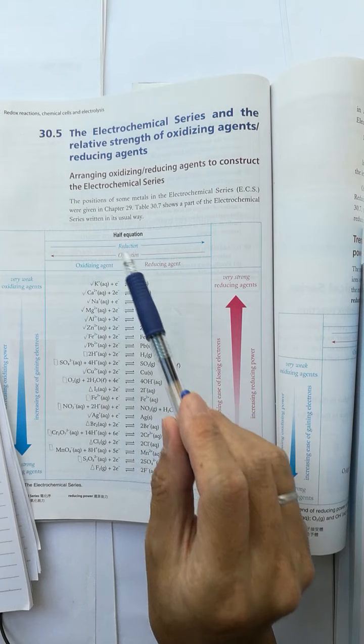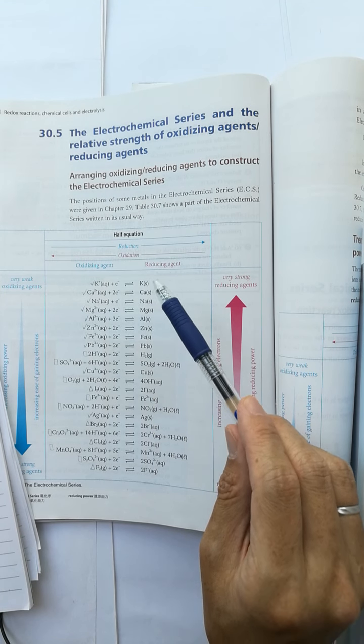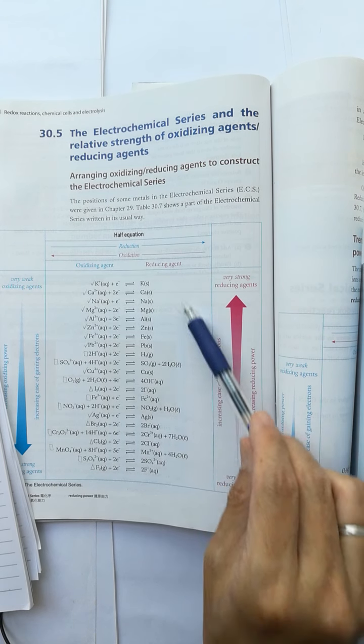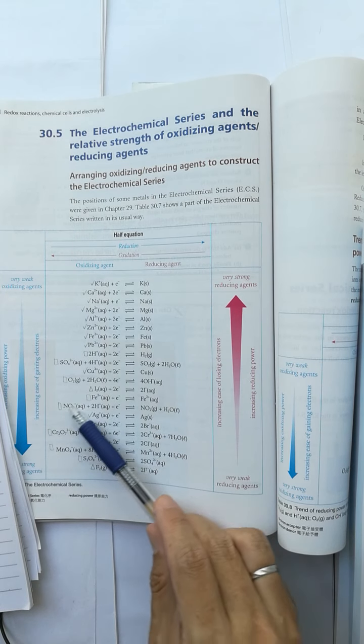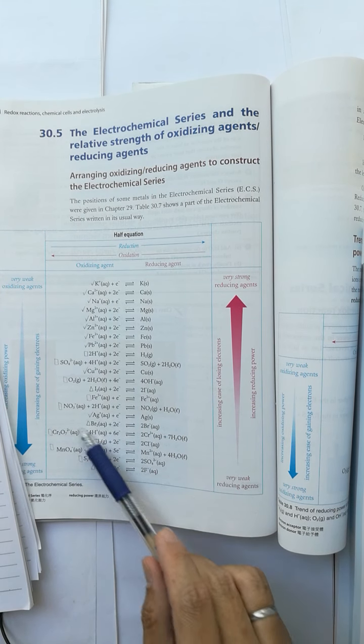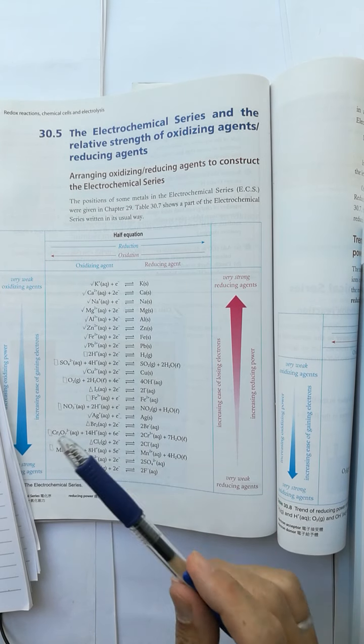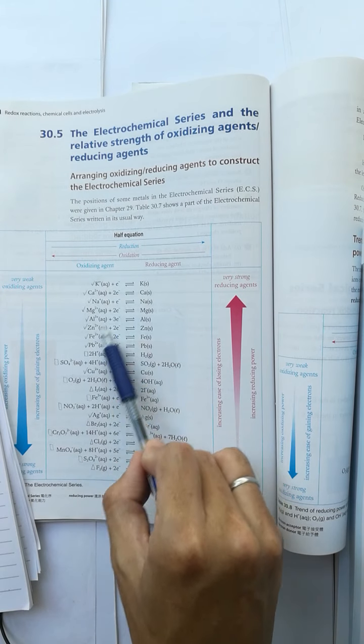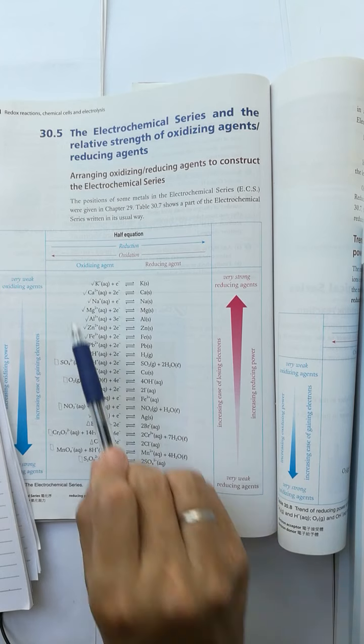The ECS gives a prediction for a reaction like this: top right hand side reducing agent reacts with bottom left hand side oxidizing agent. However, top left hand side and bottom right hand side cannot react.